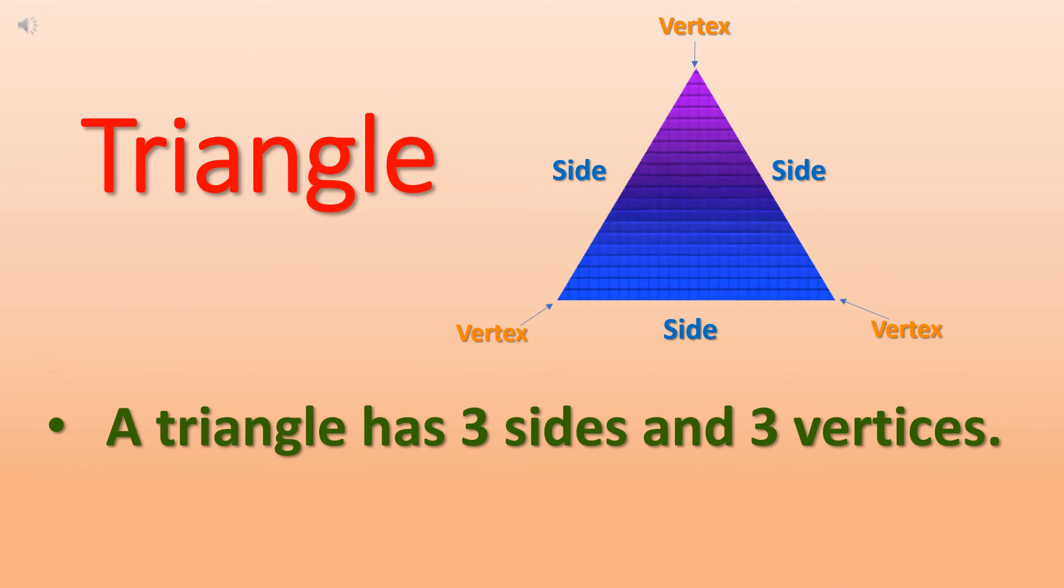And next shape is triangle. A triangle has 3 sides and 3 vertices. Triangle ki 3 sides hoti hain, aur 3 hii vertices hoti hain, corners hoti hain. And triangle ki 3 sides equal bhi ho sakti hain, aur different sizes ki bhi ho sakti hain.